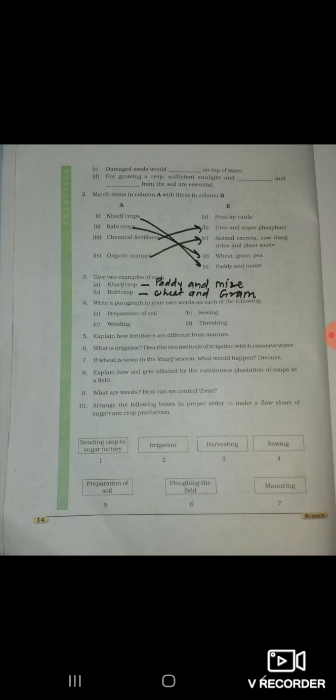Match the column A and B. Kharif crops... sorry, Kharif crop: paddy and maize. Rabi crop: wheat, gram, pea. Chemical fertilizer: urea and super phosphate. Organic manure: animal excreta, cow dung, urine and plant waste.